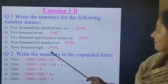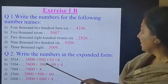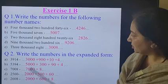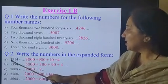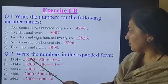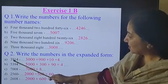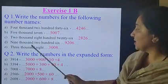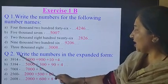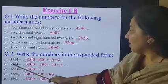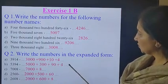Question number 2: write the numbers in expanded form. The numbers are given; you have to write the expanded form. Like 2,940: we have 2,000, 9 hundreds, 4 tens, and 0 ones. Similarly, 5,395: we write 5,000 plus 300 plus 90 plus 5.